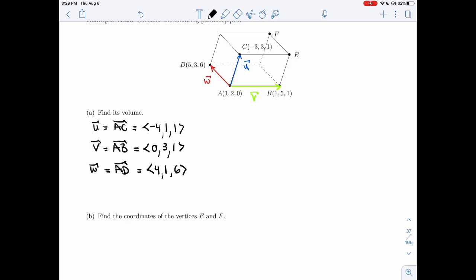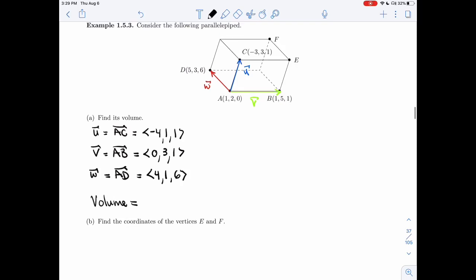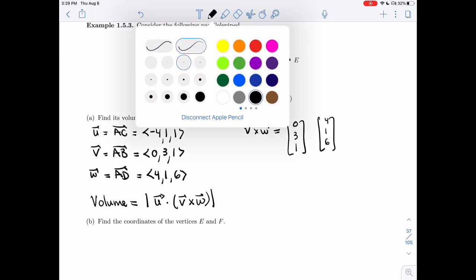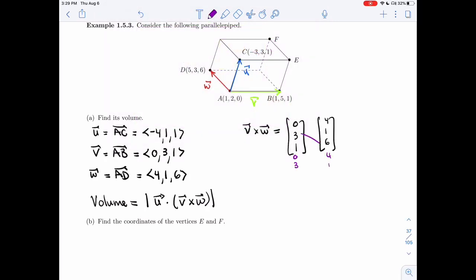Alright, I need to take the absolute value of triple scalar product. Let me do it in the alphabetical order, U dot V cross W. I need V cross W. That would be 0, 3, 1 cross with 4, 1, 6. And so I get 18 minus 1, I get 17. I get 4 minus 0, I get 4. And I get 0 minus 12, I get minus 12.